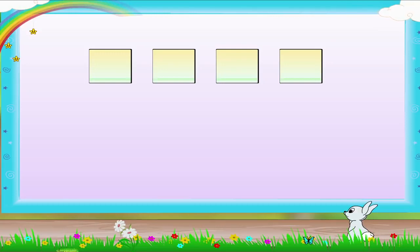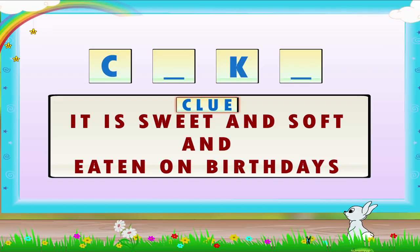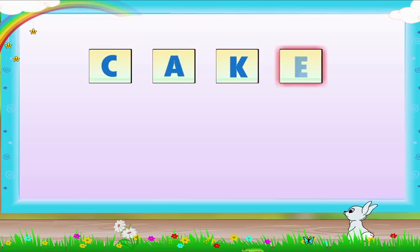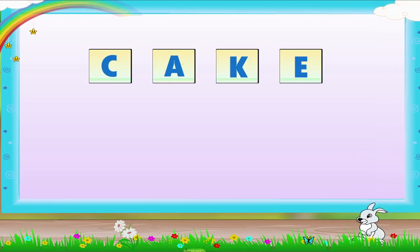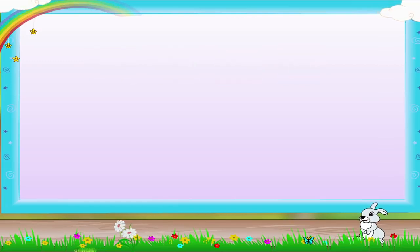The next word is C, dash, K, dash. You cannot guess. Here is the clue: it is sweet and soft and eaten on birthdays. Good. It is C, A, K, E. Cake. Yummy, yummy! I am sure you enjoyed making words from letters. Now you can make many words. Do you know the game Scrabble? It is a word game that you can play with your friends.